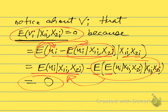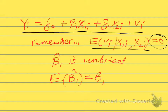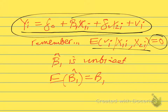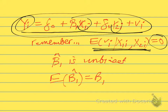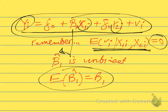Remember, we just showed that the expected value of vᵢ conditional on x1ᵢ and x2ᵢ is equal to zero. So this regression satisfies the classical ordinary least squares assumption. That means that β₁, when we estimate it and get β̂₁, will be unbiased. We just demonstrated what we set out to show.